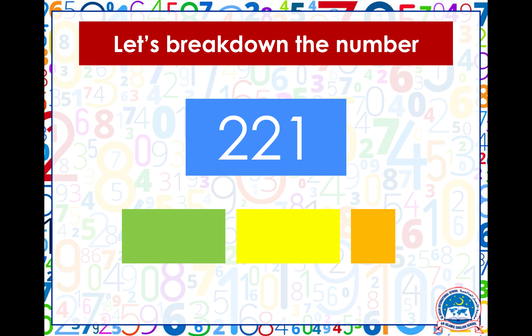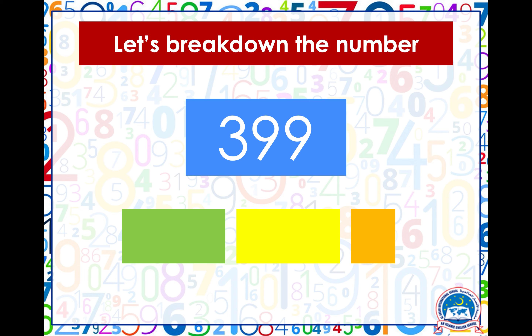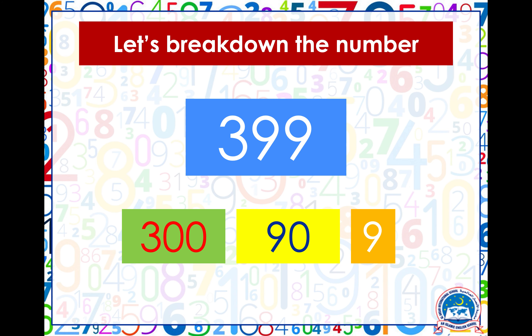Try another one: here we have two hundred and twenty-one. If you've guessed that this makes two hundreds, two tens and one one — you are correct. So it's two groups of hundreds, two groups of tens and one one. Try this one: we have three hundred and ninety-nine. If you've guessed three hundreds, nine tens which make ninety, and nine ones — you are a star, well done! We have now come to the end of today's lesson. I hope you all enjoyed it. Assalamu alaikum.